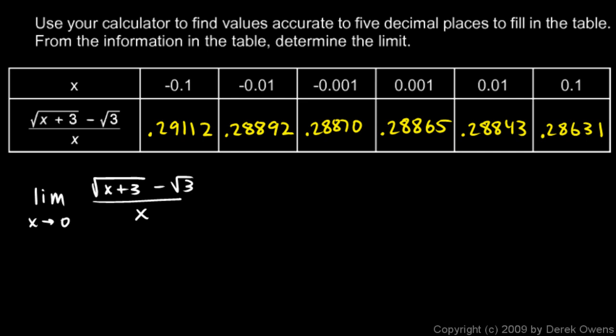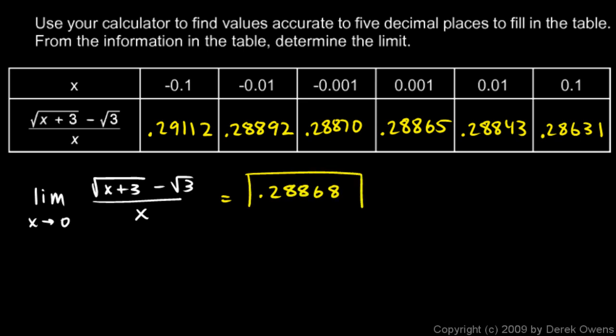Do these values seem to be approaching a particular number as we get closer to zero? From the left: 0.29, then 0.288, then 0.288 — they're converging around 0.288. From the right similarly. Right in between those two closest values, we can average them: that gives approximately 0.28868. That actually works out to one over two root three, though you wouldn't necessarily see that just from the table.